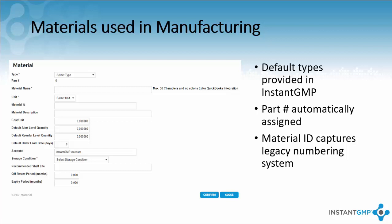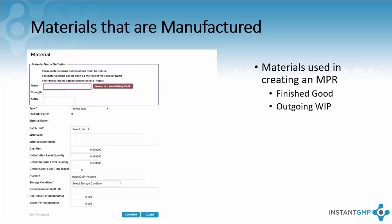The cost per unit and default order lead time will be covered in a future video called MRP. Default alert and reorder levels are used to send automatic reports. Materials that are manufactured have an identical screen as the materials used in manufacturing, with the addition of a blue outline box. This box gives the material name the option for a more precise description that includes the name, strength of a product, and a suffix.